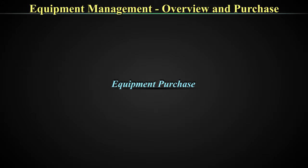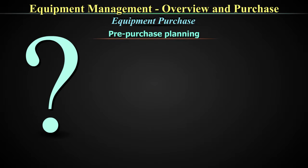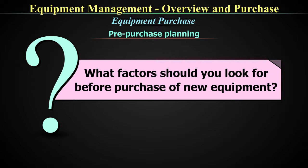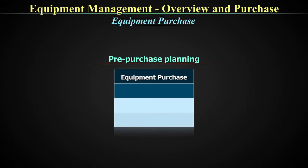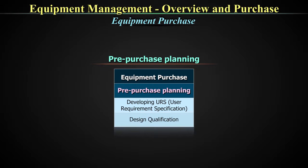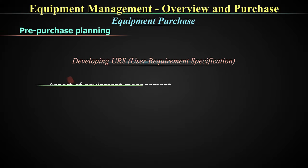Let's go into the details of purchase, starting with pre-purchase planning. Equipment purchase is serious business — you have to have some planning. The aim of this section is to understand what factors to look for before purchase and installation of new equipment. Many leading quality systems such as GLP, ISO 9001, and EN 45000 series explain standards for equipment technical specifications and safety. Equipment purchase begins with pre-purchase planning, which includes developing the URS and design qualification.